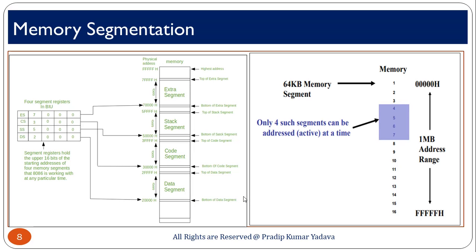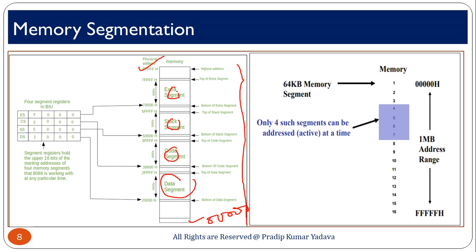This is a pictorial diagram of memory segmentation showing how you can divide 1 megabyte of memory into different segments. In this picture you can see the 1 megabyte memory with the lowest address being 00000 (five zeros) and the highest address being FFFFF (five Fs). You can see multiple segments here, each of 64 KB. This represents the starting address of a segment and this represents the ending address of the segment.